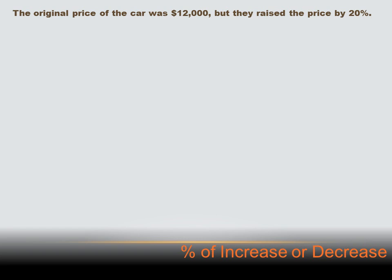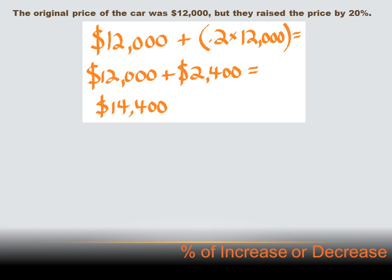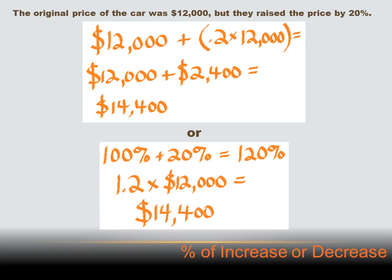What if the price was going in the other direction — they were increasing the price? The original price of the car was $12,000 and they raised the price by 20%. We could take $12,000 and add 20% of $12,000 to it: $12,000 plus $2,400, or $14,400. An easier way: 100% plus 20% is 120%, which as a decimal is 1.2. And 1.2 times $12,000 equals $14,400.